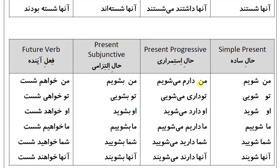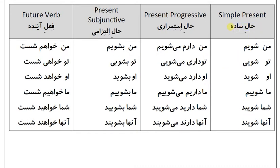آن‌ها شسته بودند. حال ساده (Simple present): من می‌شویم، تو می‌شویی، او می‌شوید، ما می‌شوییم، شما می‌شویید، آن‌ها می‌شویند. حال استمراری (Present progressive): من دارم می‌شویم، تو داری می‌شویی، او دارد می‌شوید، ما داریم می‌شوییم.